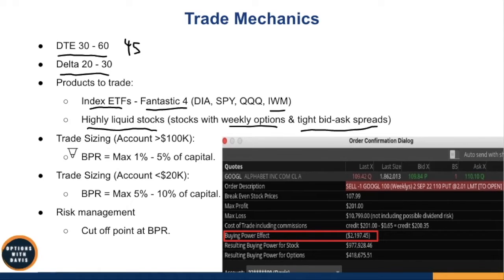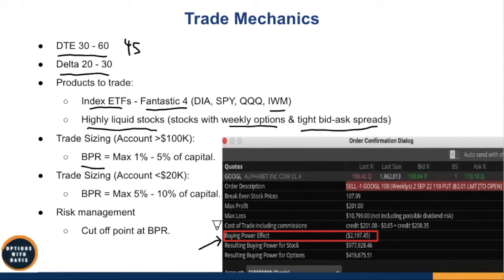For trade sizing, what you need to take note of is the buying power reduction — called the 'buying power effect' in Thinkorswim. This is the margin you actually have to put up for the position. Because this is an undefined risk strategy, we use the buying power effect as a way to define our risk. I treat it as the max risk I want to take on the trade. For example, if the buying power effect is $2,197, that is where I'll get out of the trade if I'm losing that amount.